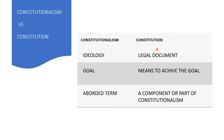Constitution is a set of legal rules which govern the government. Aise rules jo government ko govern karte hain, kisi bhi country ko govern karte hain. So, Constitution ek legal document hain jis mein rules honge, aur wo rules jo government ko govern karein ge. And that's why it describes the structure and working of the government.